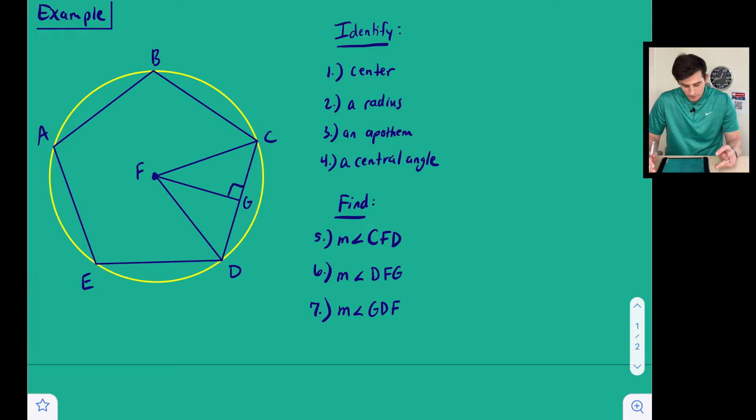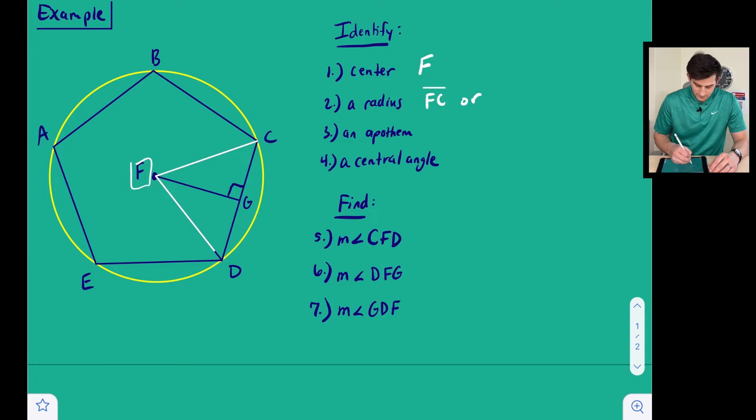The first thing we're going to do is identify the center of our pentagon. That is just right here, so we will say the center is F. The radius, we have two options here, multiple options actually, but we have two that are shown to us. So we would have from F to C, FC, or we have FD.